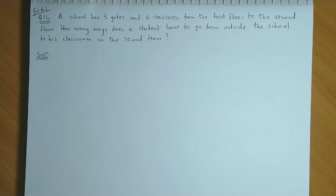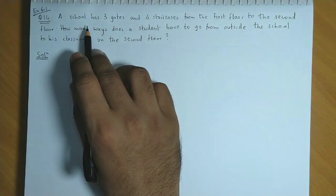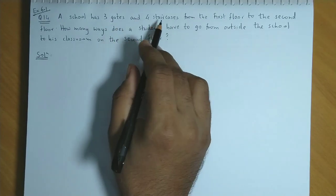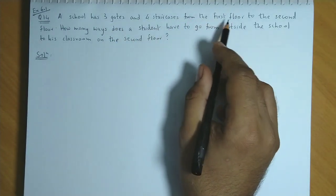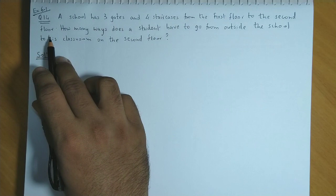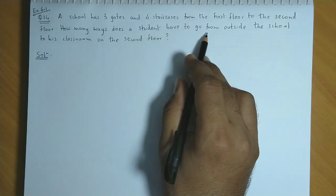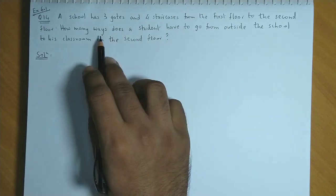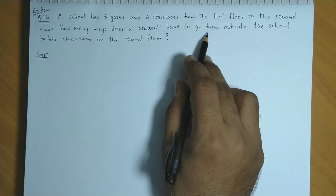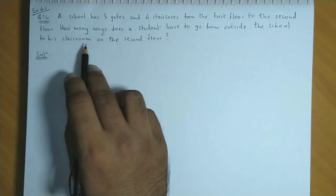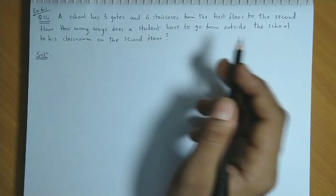I am discussing question 14 from exercise 6.1. A school has three gates and four staircases from the first floor to the second floor. How many ways does a student have to go from outside the school to his classroom on the second floor?